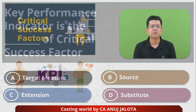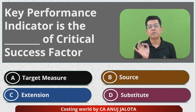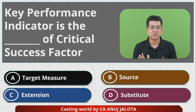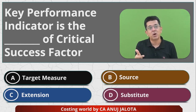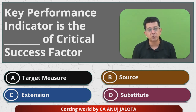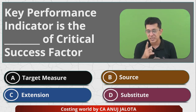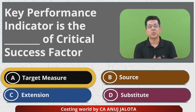So, a Key Performance Indicator is a measure of a Critical Success Factor. You have a CSF — to find out whether you will achieve it or not, you measure it through KPIs. Therefore, out of the four options, A — Measure — is the correct answer. See you all next time, bye, take care.